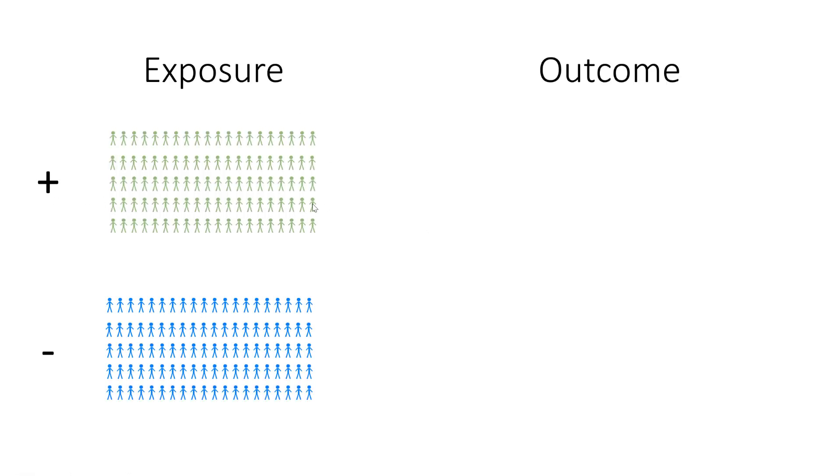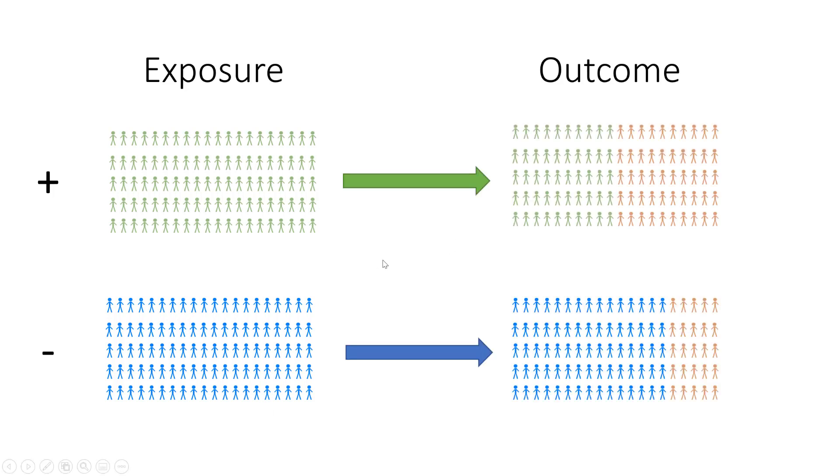You follow the exposed group and the unexposed group over time and examine the probability of outcome in each group. You can look at the risk of outcome in each group and calculate a risk ratio, or you can calculate the odds of outcome in each group and calculate the odds ratio.